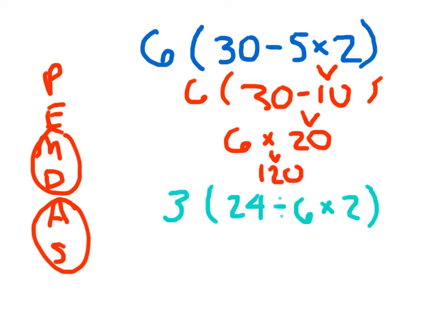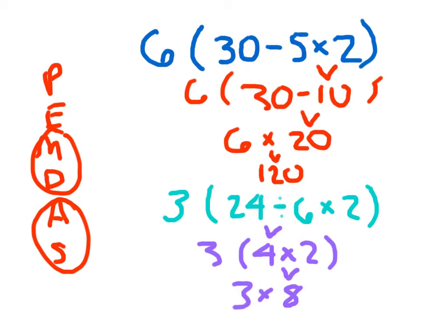I've written out another one for you to solve. Go ahead and hit pause after you've written it out and evaluated this expression. Hope you didn't get tricked here. Evaluating the parentheses first: 24 divided by 6 is 4; 4 times 2 is 8. I have evaluated those parentheses. It was 3 of (24 divided by 6 times 2), which is 3 times 8, which equals 24.